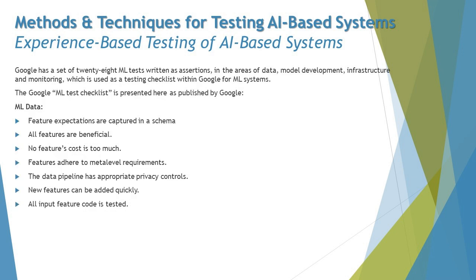Now moving on to checklist-based testing, the third experience-based technique. Google has set up 28 ML test assertions in the areas of data, model development, infrastructure, and monitoring, which are used as a testing checklist within Google for ML models. This is one example of a checklist — it is not restricted to Google and any industry is free to use it as a reference or come up with their own set of checklists depending on their product type.